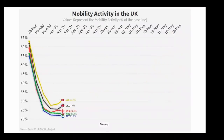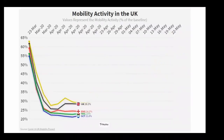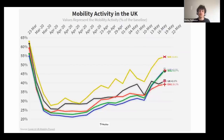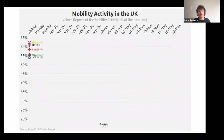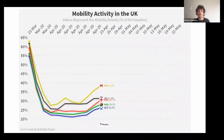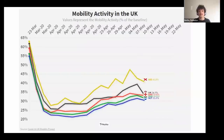What we're really interested in is whether we can use this data to understand how different socio-economic groups responded differently to mobility restrictions. This is interesting for several reasons — for instance, depending on socio-economic background and what job someone has, it may be more or less easy to work from home.